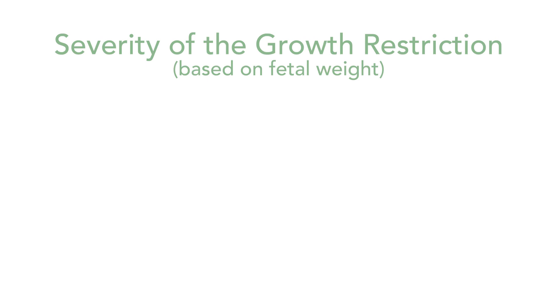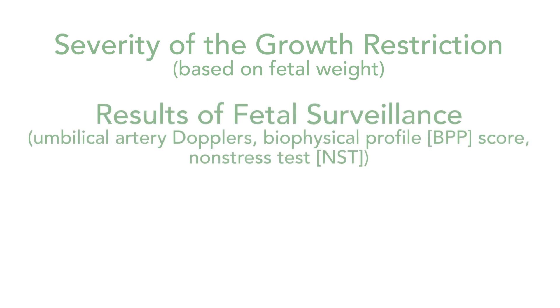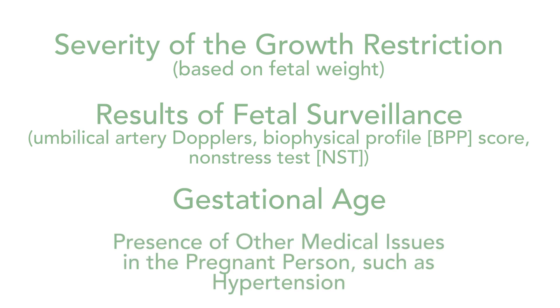Many people wonder: are babies that are growth restricted delivered early? The timing and mode of delivery of pregnancies with fetal growth restriction is based on a combination of factors, which include the severity of the growth restriction based on fetal weight, the results of fetal surveillance — which may include umbilical artery Dopplers, a biophysical profile or BPP score, a non-stress test or NST — the gestational age of the baby, and the presence of other medical issues in the pregnant person, such as hypertension. All of these factors play an important part in determining when and if a baby should be born prior to full term.